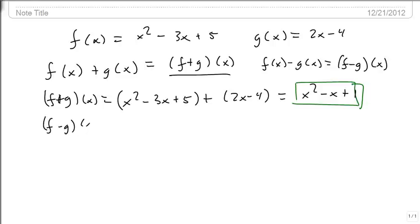f minus g of x, though, will be x squared minus 3x plus 5 minus 2x minus 4. So we come in and we change it to a plus sign by changing all the signs.